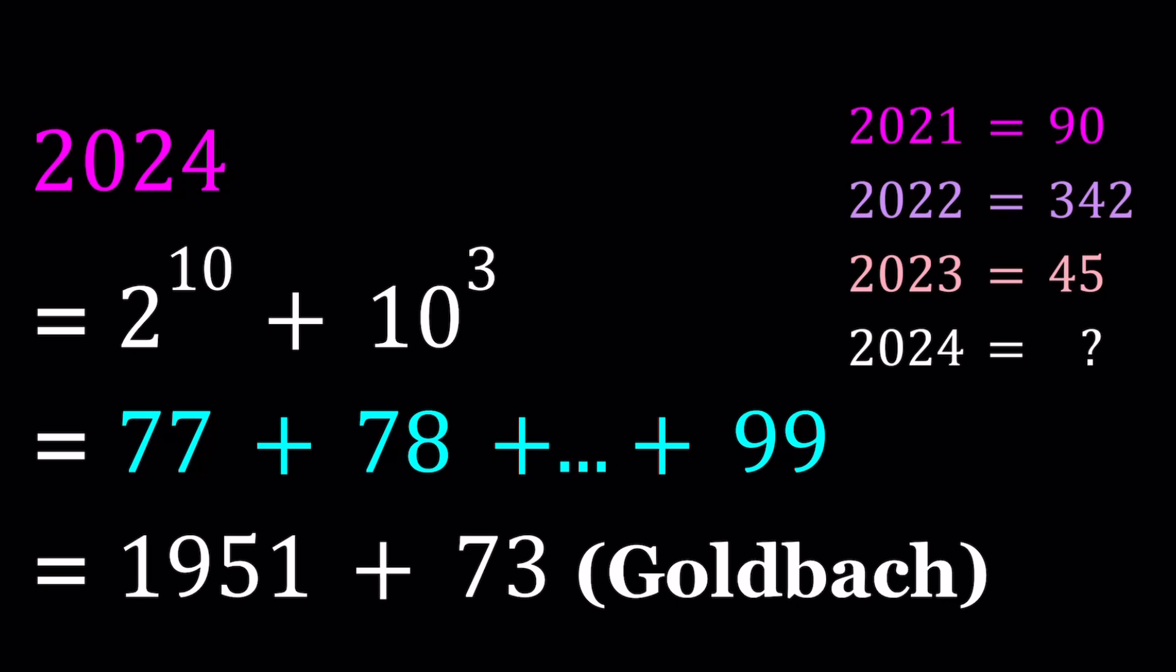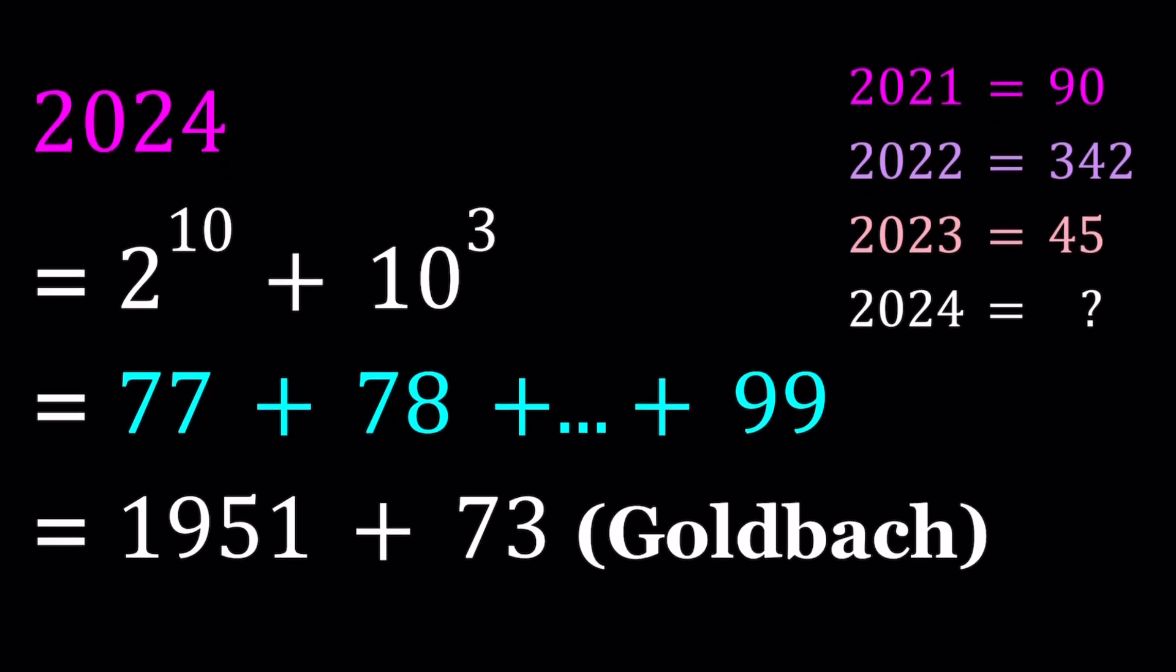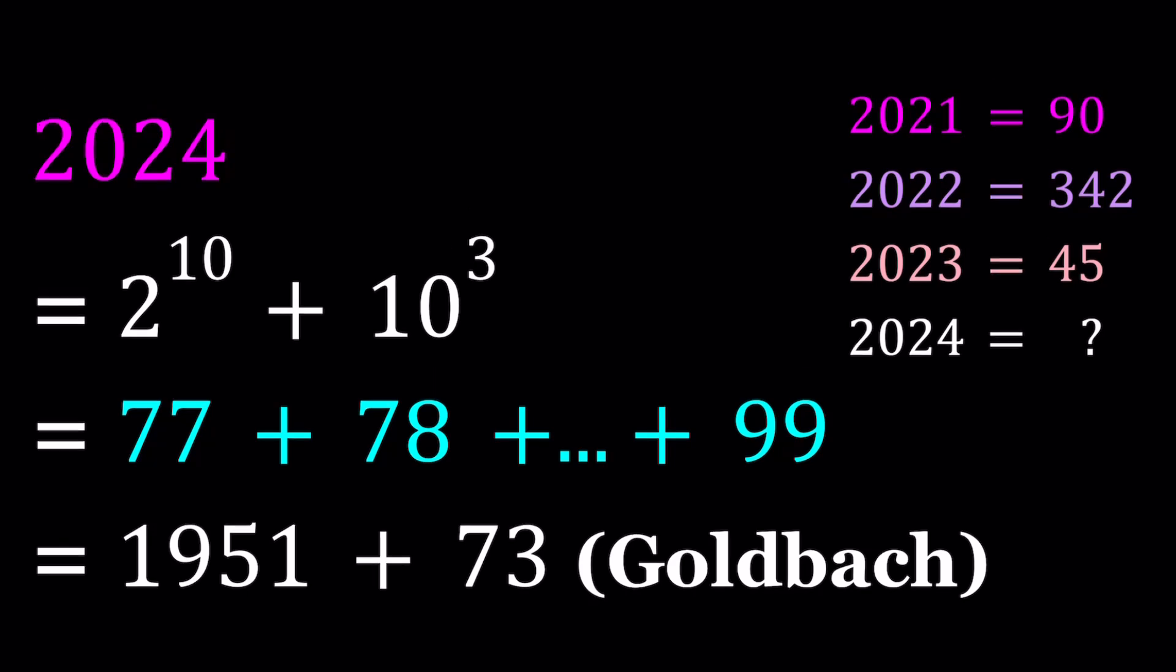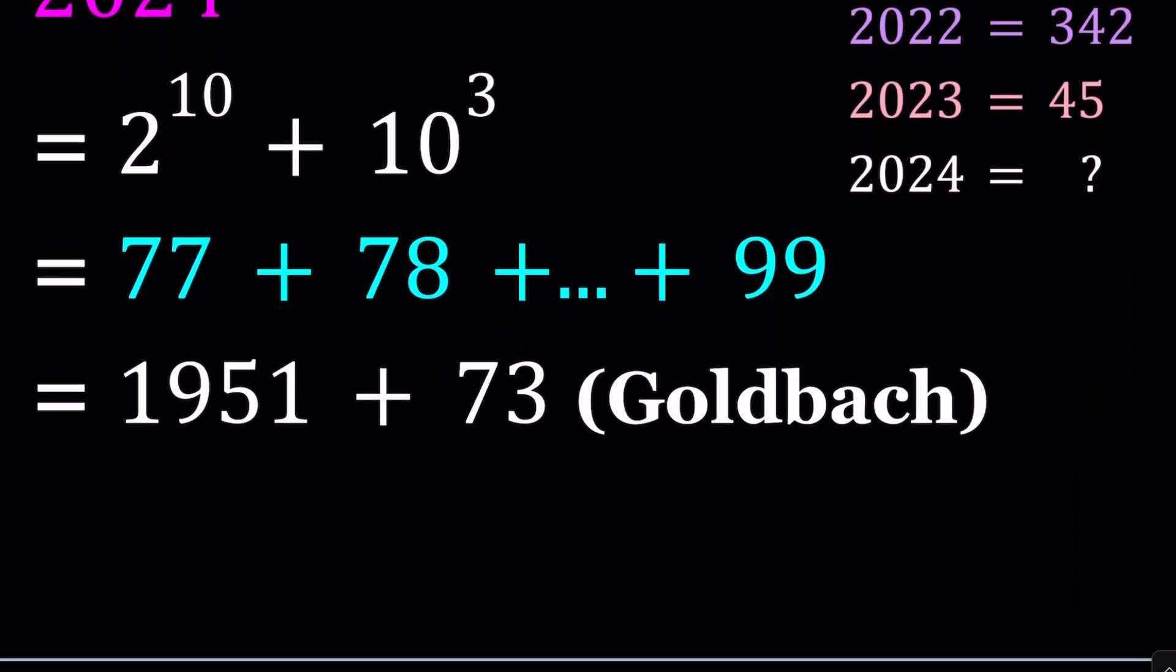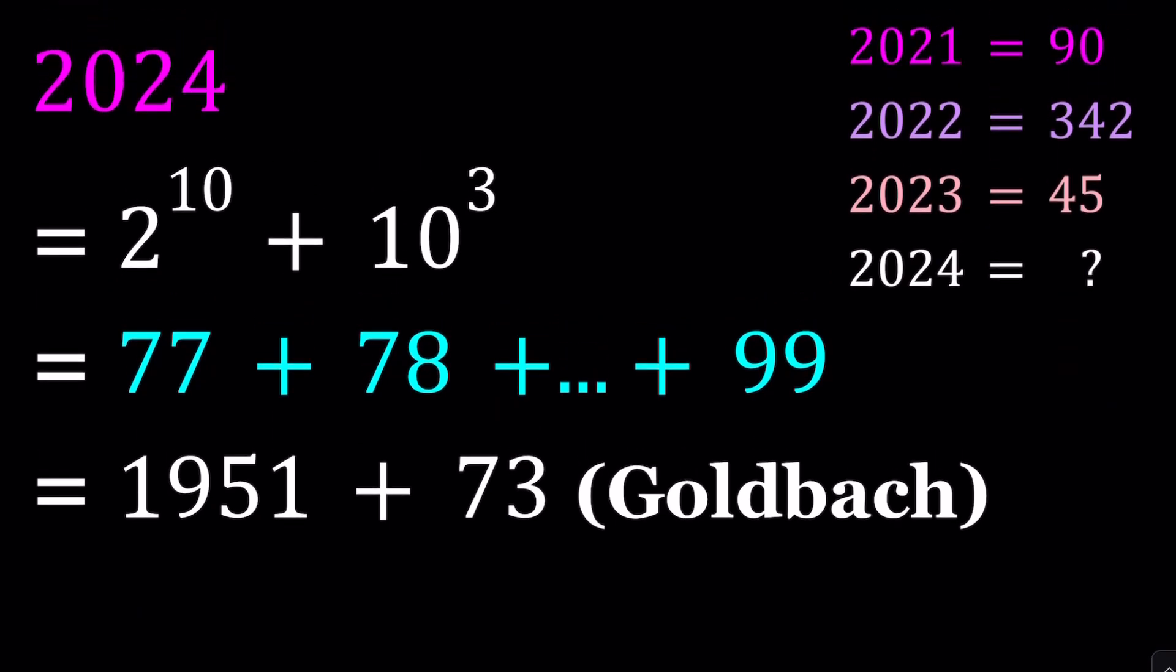Now, 2024 can be written as a sum of consecutive integers. We talked about sum of consecutive powers of integers, but this time we're talking about sum of consecutive integers, which also gives this number a special name. We'll talk about that on the next slide.